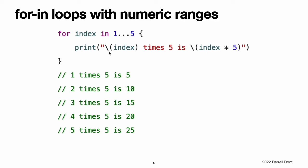In this example, index is a constant whose value is automatically set at the start of each iteration of the loop. As such, index does not have to be declared before it is used. It is implicitly declared simply by its inclusion in the loop declaration, without the need for a let declaration keyword.